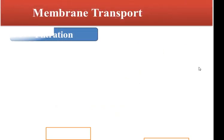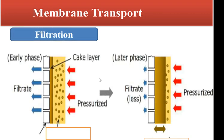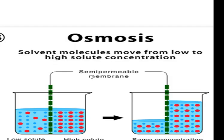Another mechanism is filtration. Filtration is the movement of molecules from high concentration to low concentration, but it depends on hydrostatic pressure acting on the cell membrane — as occurs in the kidney during filtration of blood. Osmosis is the movement of solvent molecules — especially water — from low concentration to high concentration until equilibrium is reached, where each side becomes equal to the other.